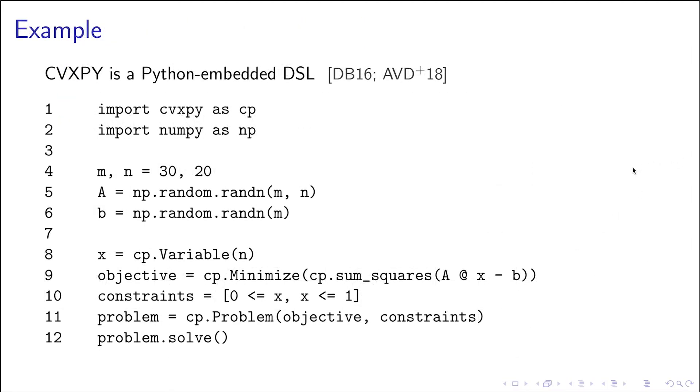Here's some example of CVXPy code. So we import it, we create some data. Here we define a variable object which we assign the name x. Here we construct a sort of a quadratic loss, the sum of the squares of this vector, and we've overloaded the different operations like @ which is matrix multiplication, and minus, so that this all gets parsed as a CVXPy expression.